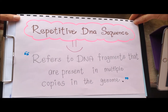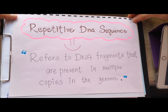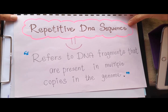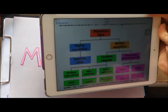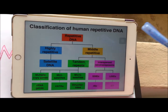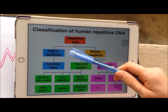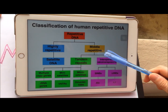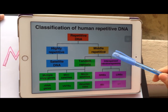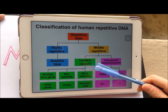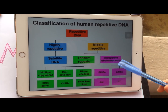Repetitive DNA Sequence refers to DNA fragments that are present in multiple copies in the genome. Repetitive DNA can be divided into highly repetitive and middle repetitive based on their arrangement. It can be further divided into tandem repeats and interspersed bits based on their mode of amplification.